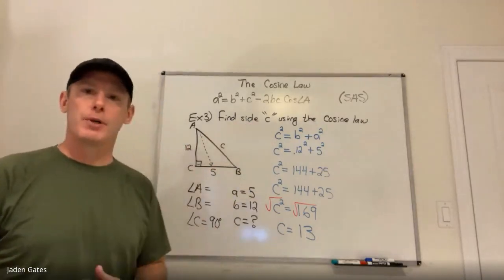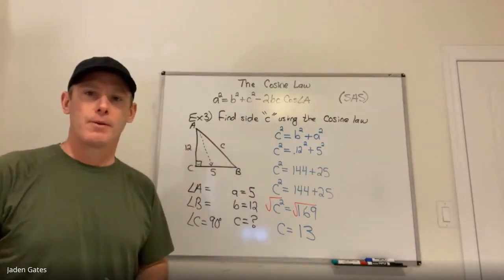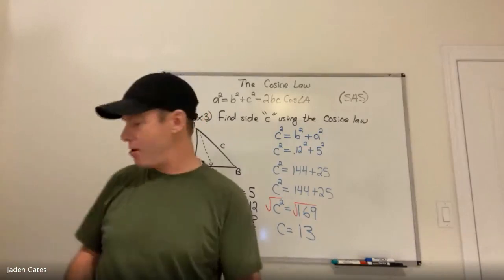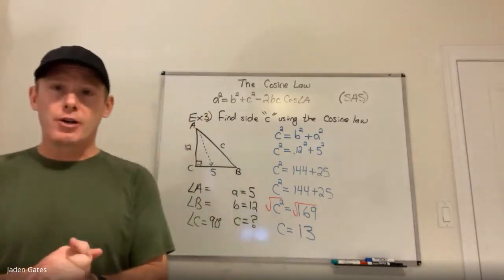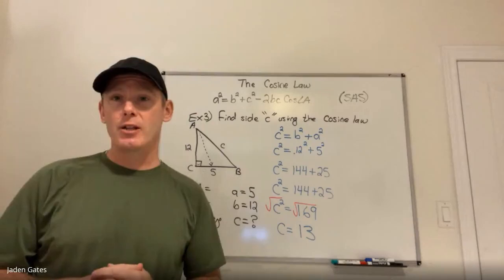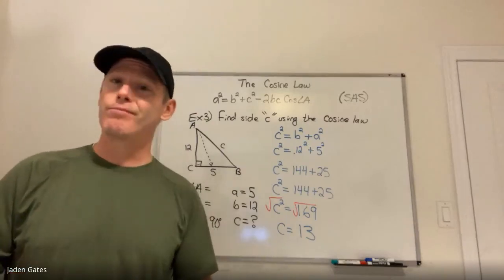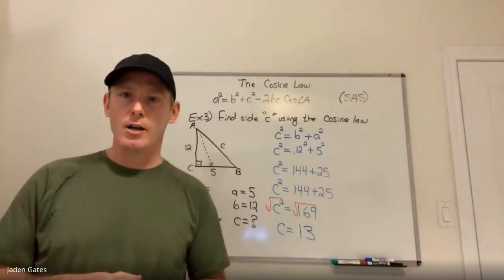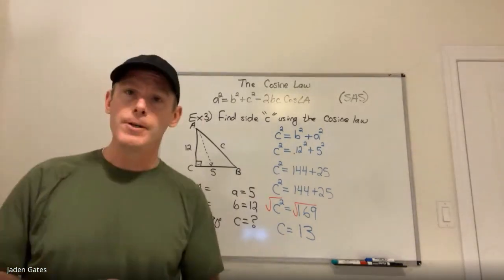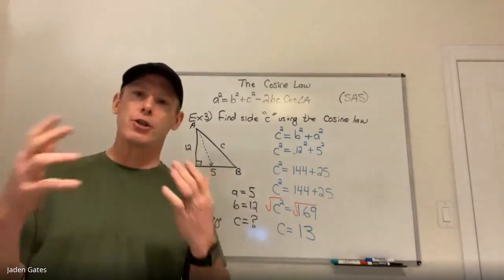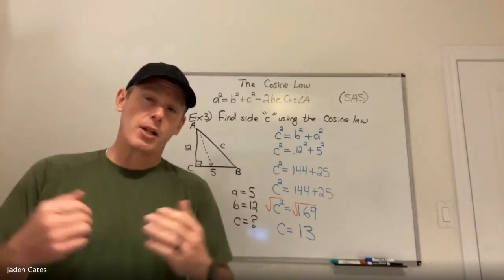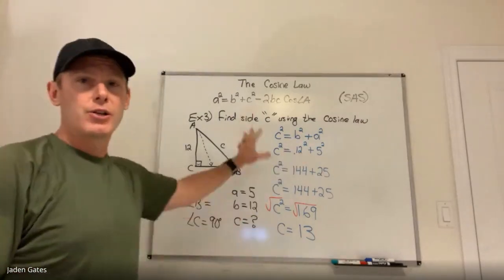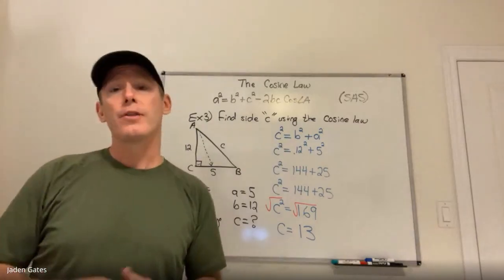C squared equals b squared plus a squared — that's the Pythagorean theorem! The key is: when you use the cosine law for a right-angled triangle, it simplifies down to the Pythagorean theorem. When you use the sine law for a right-angled triangle, it just becomes the sine ratio. The cosine law and sine law can be used for right-angled triangles, but they simplify down to the Pythagorean theorem or the sine ratio.